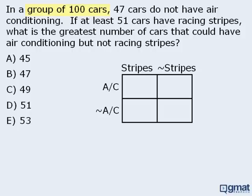First we're told that there are 100 cars altogether, so let's add that information here. Next we're told that 47 cars do not have air conditioning. Since these two boxes are reserved for cars that do not have air conditioning, the sum of these two boxes must be 47. If 47 of the 100 cars do not have air conditioning, we can conclude that the remaining 53 cars do have air conditioning, so the sum of these two boxes must be 53.